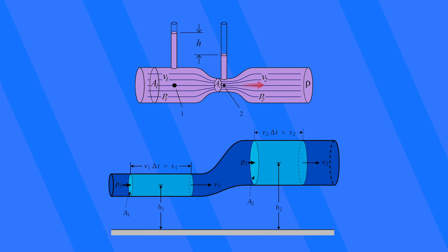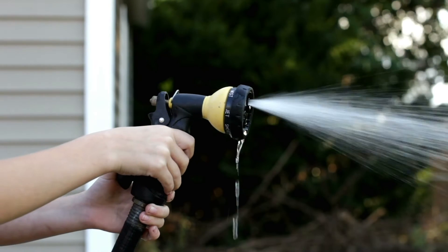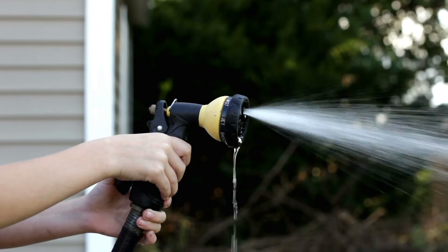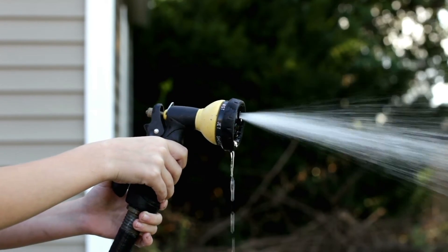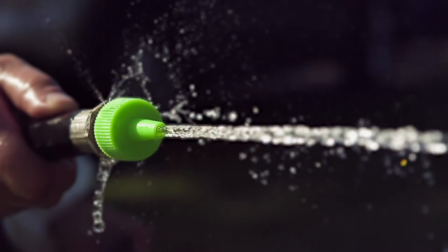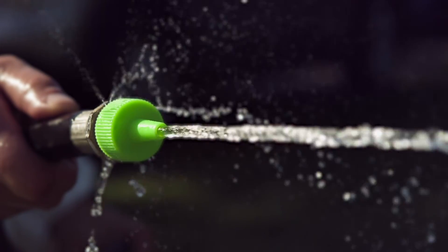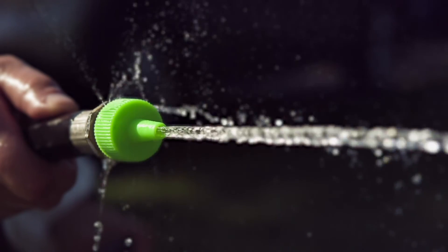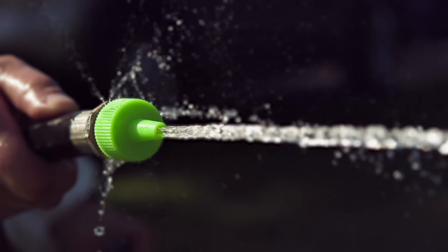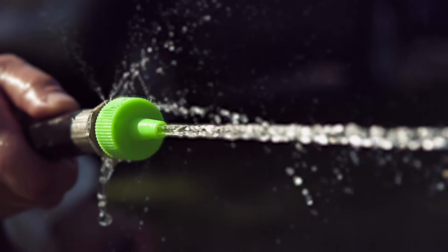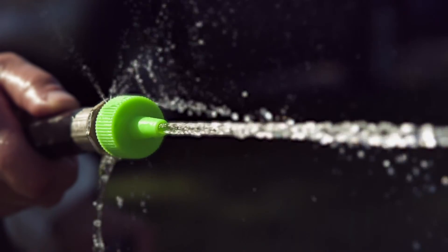You might think that if the velocity is super high, then the pressure must also be super high too. After all, if you stick your hand at the end of a hose nozzle, you're going to feel a lot of force. However, this force you're feeling isn't coming from the pressure in this instance. It's coming from your hand taking the momentum out of the fluid because it's moving at such a high velocity.